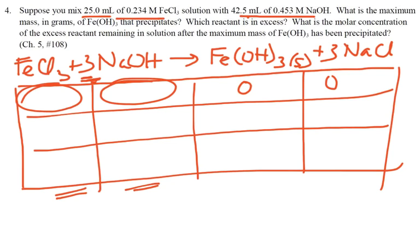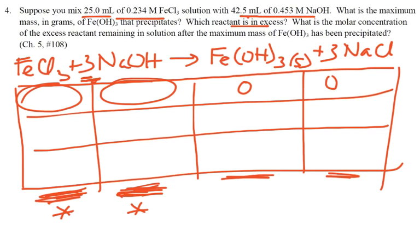One of these is going to end up being zero. Once you get the change row, fill in all the changes. Which reactant is excess and which is limiting — that's easy. For the molar concentration of the excess reactant: figure out which one has moles remaining, then divide by the total volume. You add those two volumes together to get the total volume. Moles divided by total volume gives the molar concentration of the excess reactant.